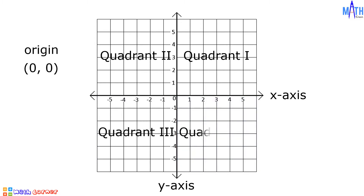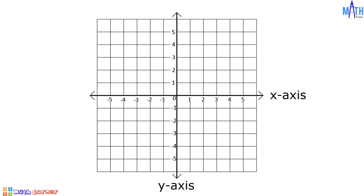Let us plot points in this Cartesian plane. Number 1, let us plot (4, 1). In this point, 4 is the x-coordinate and 1 is the y-coordinate. To plot this point, from the origin we will move 4 units to the right and 1 unit upward. And this is (4, 1).